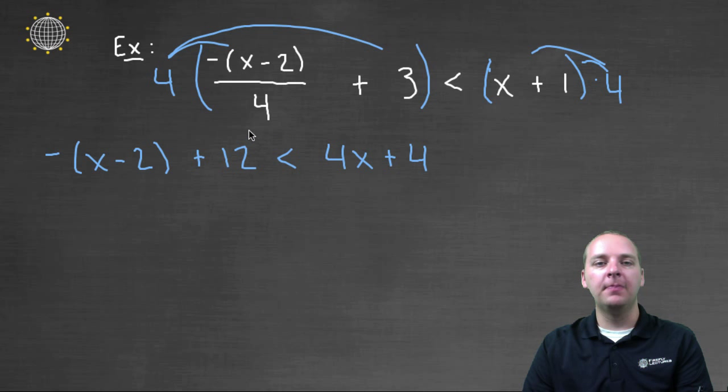Now notice what happened is this new inequality does not have a fraction anymore, and that's great news. So let's keep going as we typically would. Next thing I think I would do is distribute this negative here to get rid of that distributive property there. And we'd have negative x plus two plus twelve is strictly less than four x plus four.